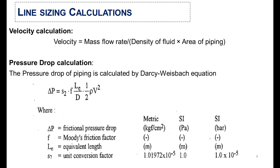These are the formulas for velocity calculation and pressure drop calculations. In the pressure drop calculation, the Moody friction factor is one of the key parameters. Similarly, the other parameters are selected from standard tables.